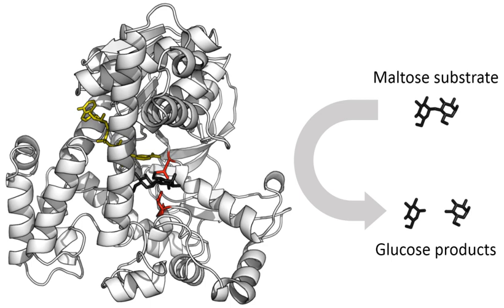Enzymes such as amylases and proteases break down large molecules into smaller ones, so they can be absorbed by the intestines. Starch molecules, for example, are too large to be absorbed from the intestine, but enzymes hydrolyze the starch chains into smaller molecules such as maltose and eventually glucose, which can then be absorbed. Different enzymes digest different food substances. In ruminants, which have herbivorous diets, microorganisms in the gut produce another enzyme, cellulase, to break down the cellulose cell walls of plant fiber.